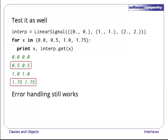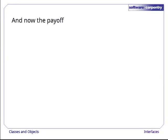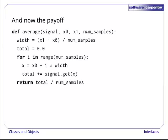And yes, when we test error handling, it still works, too. And now for the payoff, the whole reason we implemented sampling using classes. This function, average, calculates the average value of a signal between two points.